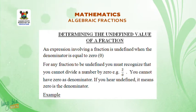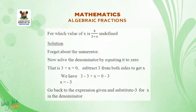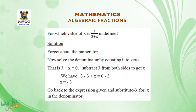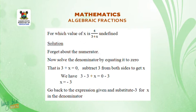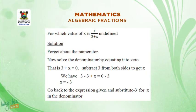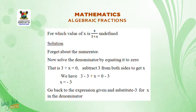Example: For which value of x is 4 all over 3 plus x undefined? Solution: Forget about the numerator. Solve the denominator by equating it to 0. That is, 3 plus x equals 0.